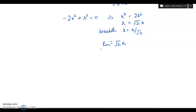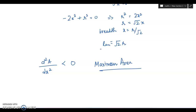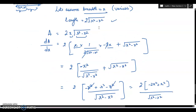Now we also have to show that it is maximum area. For that, find d²A by dx². When you evaluate it, you will get it less than 0. If it is less than 0, then it is proved that the area is maximum. These were the steps, and this is how you will gain 6 marks in this question. Please follow the steps shown above.